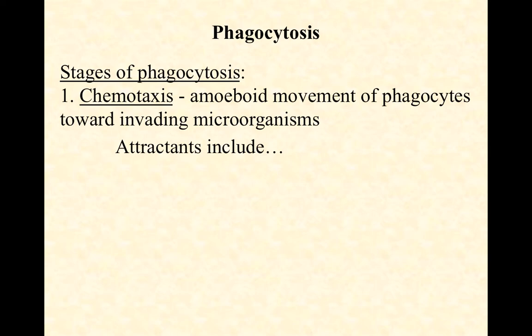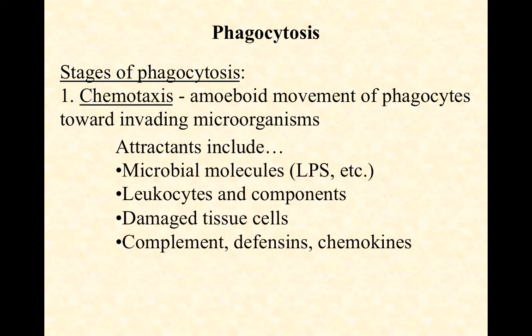Pause the video and make a list of what you think would be the most likely chemotactic attractants to draw phagocytic white blood cells to the site of an infection. Here's my short list: microbial molecules — things like LPS, peptidoglycan, or capsular polysaccharides — that are in high concentration at the site of infection and lower concentration as you move away, creating a gradient. Chemotaxis requires a gradient, and cells will move towards a higher concentration of these molecules.